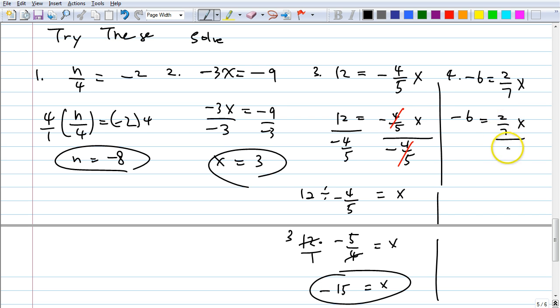Divide by 2 over 7. That's right. And of course, what's 2 over 7 over 2 over 7? 1. Not 0. Because if it was 0, you get 0. So you get, on the right side, you get x.